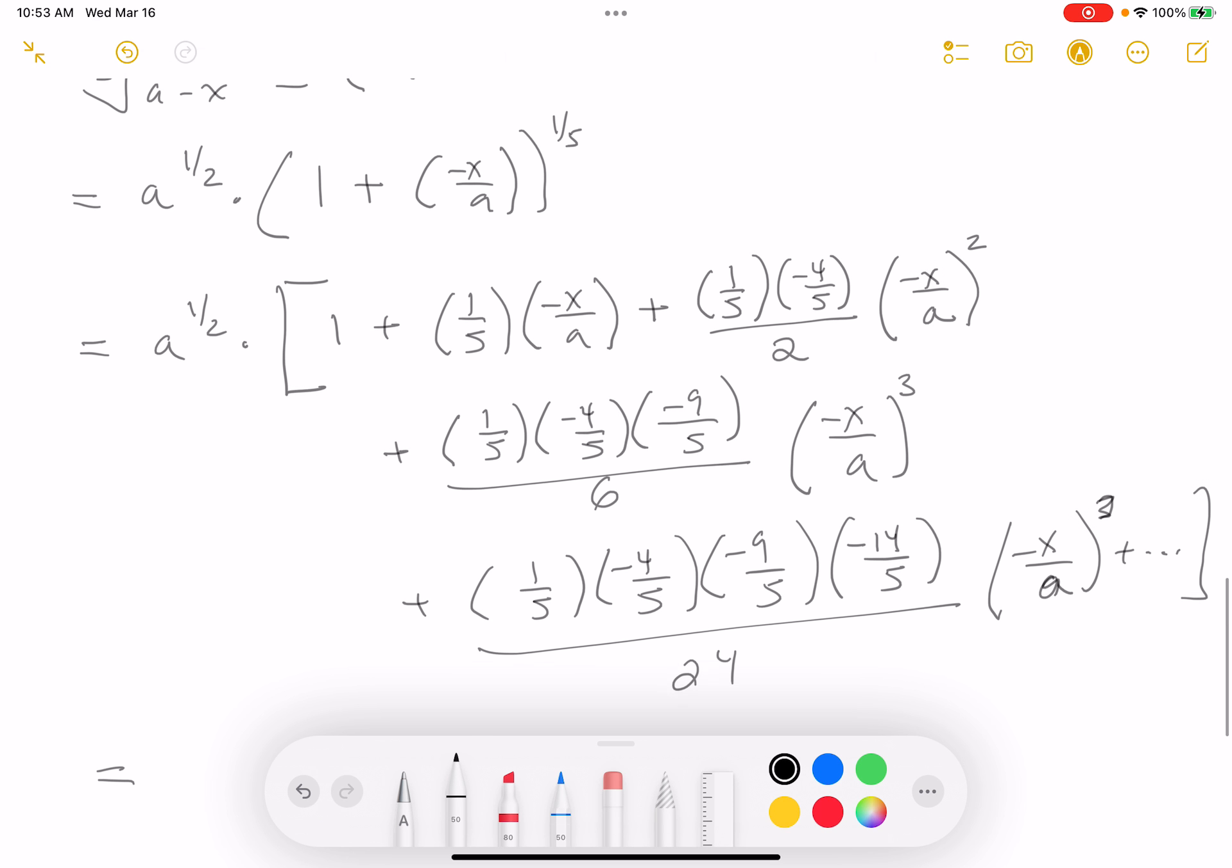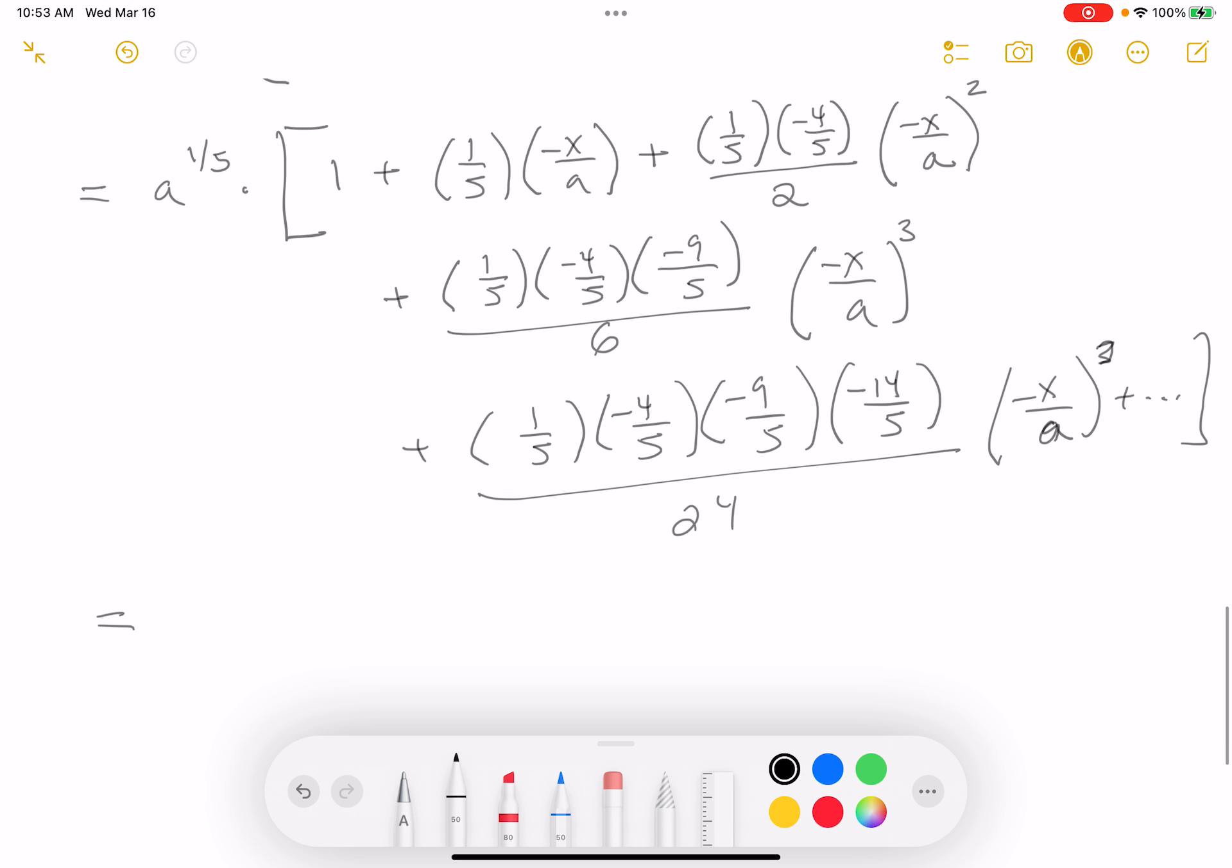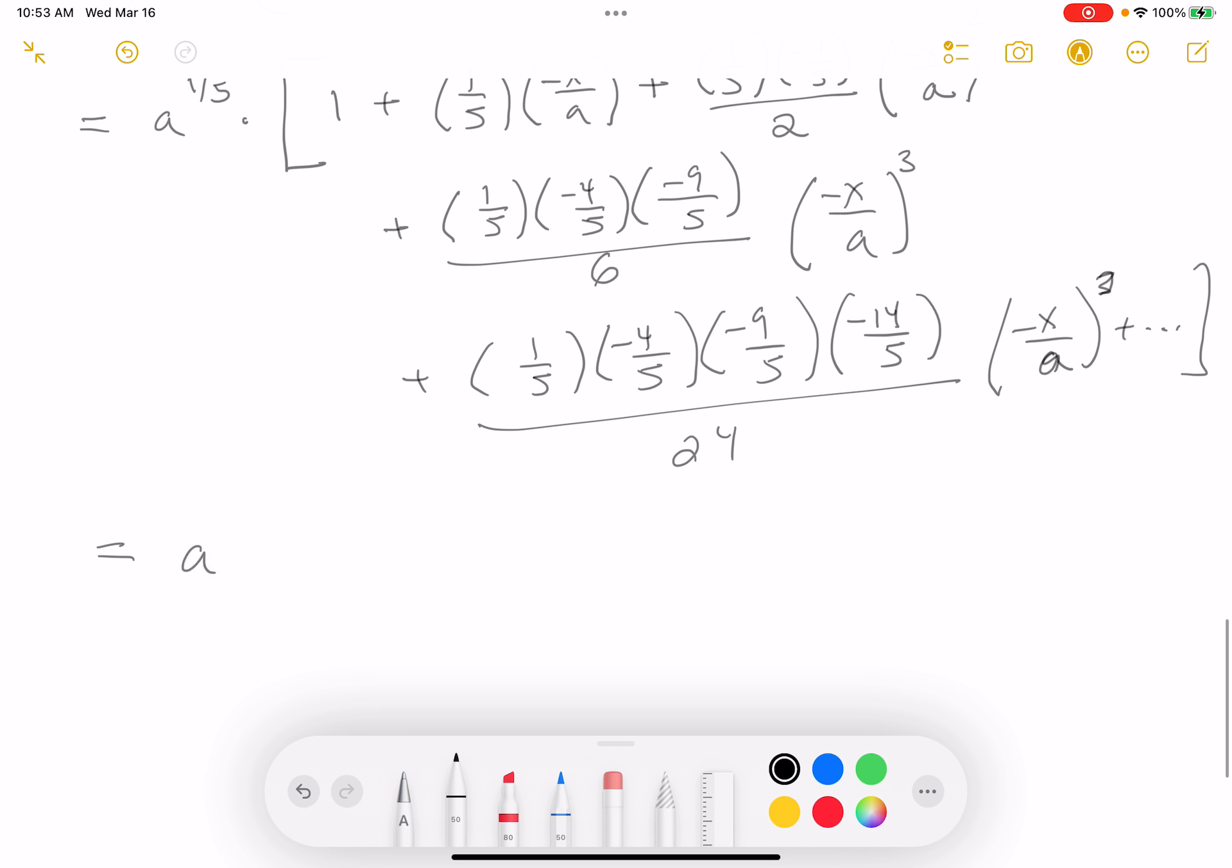But right now, I've got to do it. And what do I get? I get a to the, you know what? I made a mistake over here, and I just noticed it. The reason I notice things is they just look out of place. They don't look like they belong there. That shouldn't be a two, by the way. It should be a five. Sorry about that. I guess I got roots in my brain, square roots. All right? So let's write this down. It's going to be a to the one-fifth.